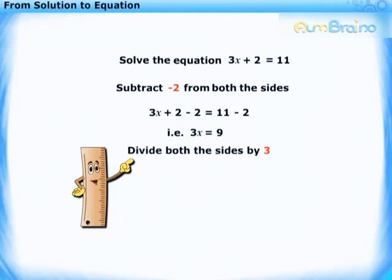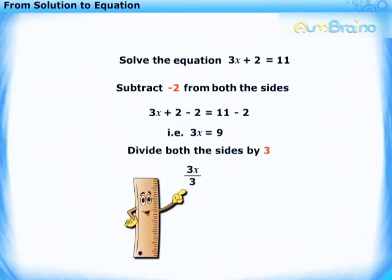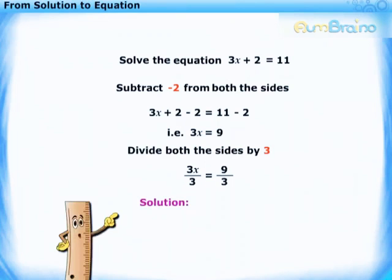Now let us divide both the sides by 3. We get 3x upon 3 is equal to 9 upon 3. The solution is x is equal to 3.